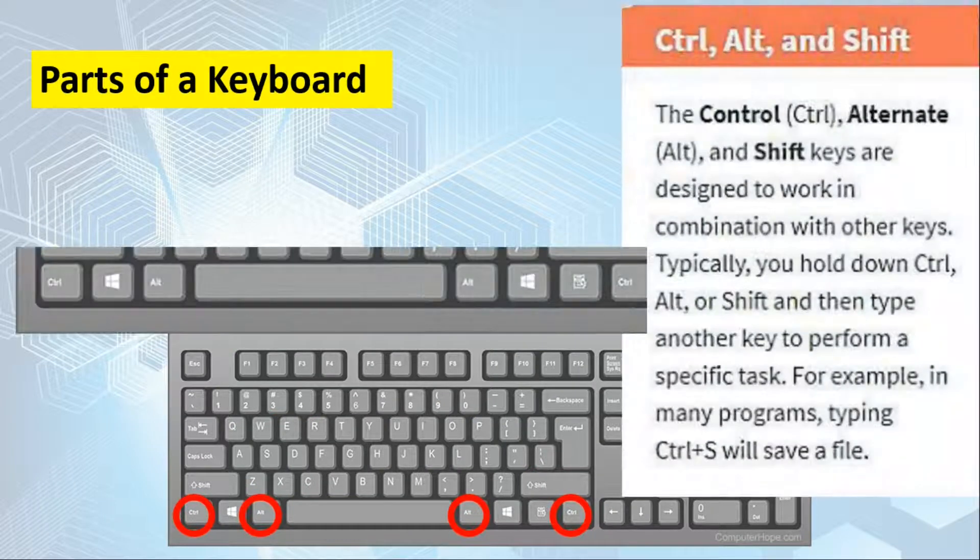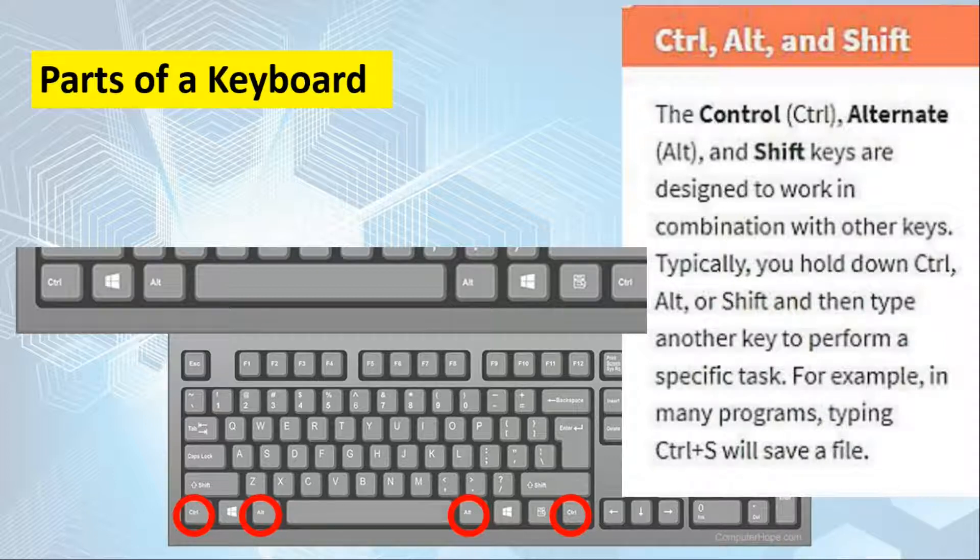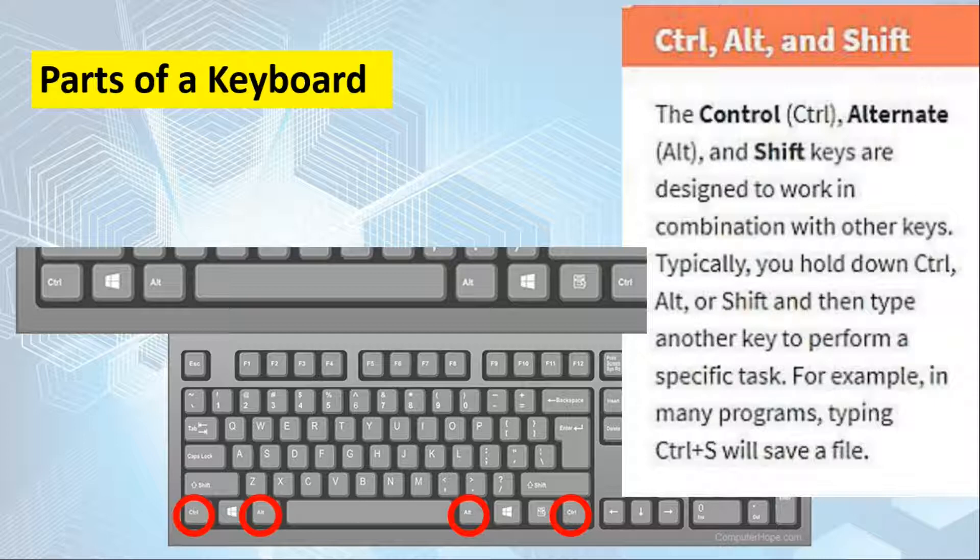We also have the control, alt, and shift. The control, the alt or alternate, and shift keys are designed to work in combination with other keys. Typically, you hold down a control, alt, or shift, and then type another key to perform specific tasks. For example, in many programs, typing control S will save a file.